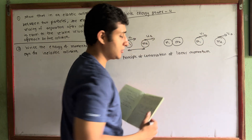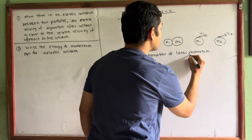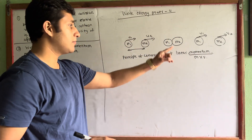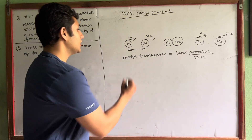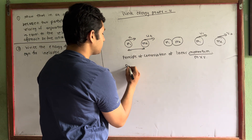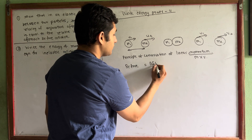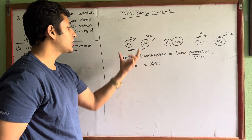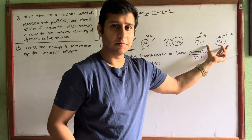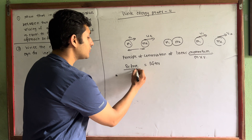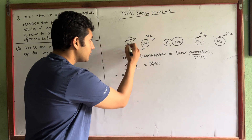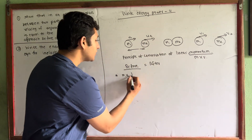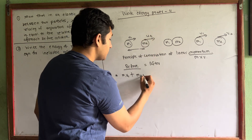Momentum means mass into velocity. This principle states that linear momentum before collision equals linear momentum after collision. Before collision, the momentum of the first particle is M1 times U1, and the momentum of the second particle is M2 times U2. After collision, the momenta are M1 times V1 and M2 times V2.